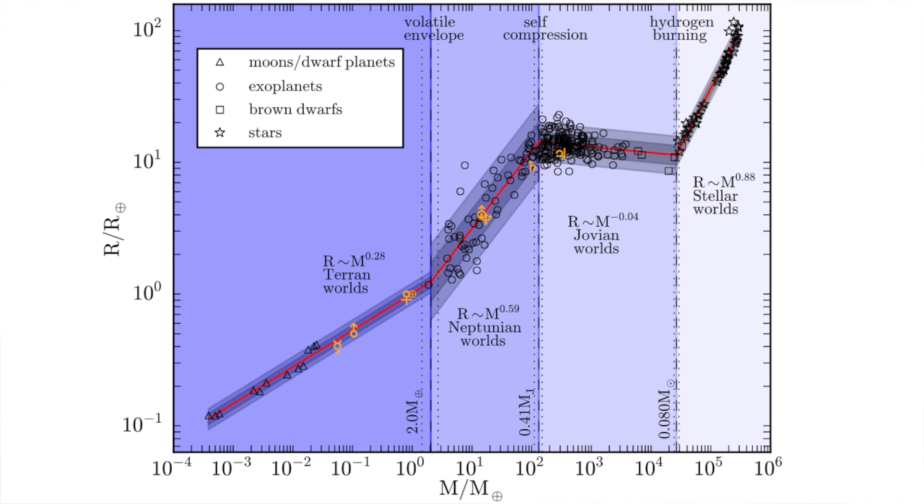Its neighboring category is labeled as the Neptunian worlds. It contains three of the other planets in the solar system: Saturn, Uranus, and Neptune. The Neptunian worlds start to accrete significant volatile envelopes, which makes the dispersion in radii much bigger than that of the Terran worlds.